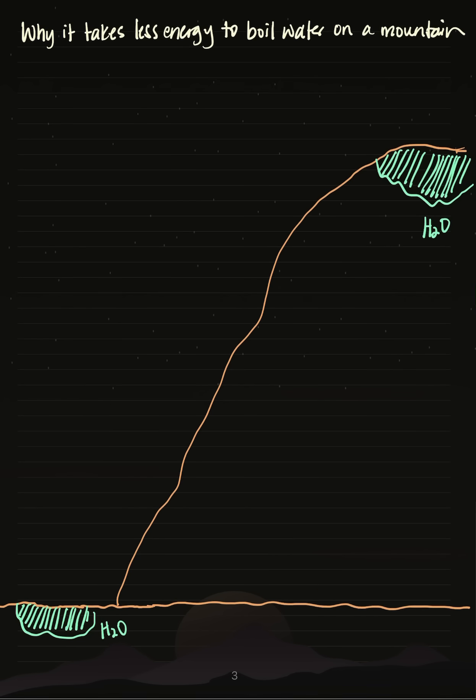In today's video, let's examine the boiling point of water. At sea level, we need a lot of energy to boil water into a vapor, specifically 100 degrees celsius or 373 kelvin.